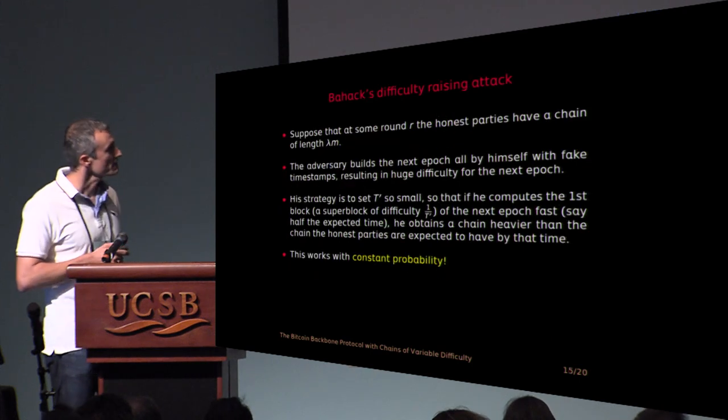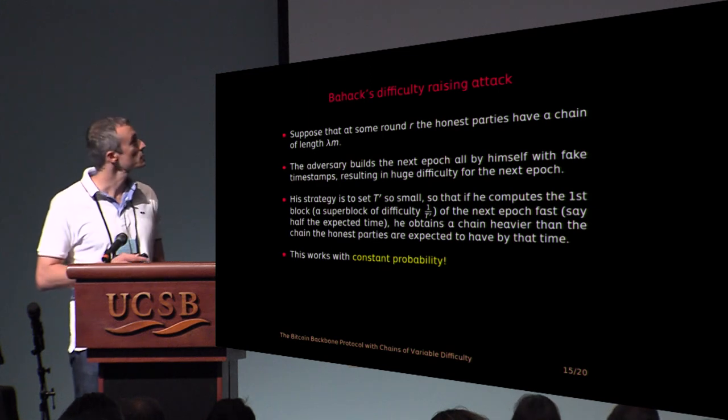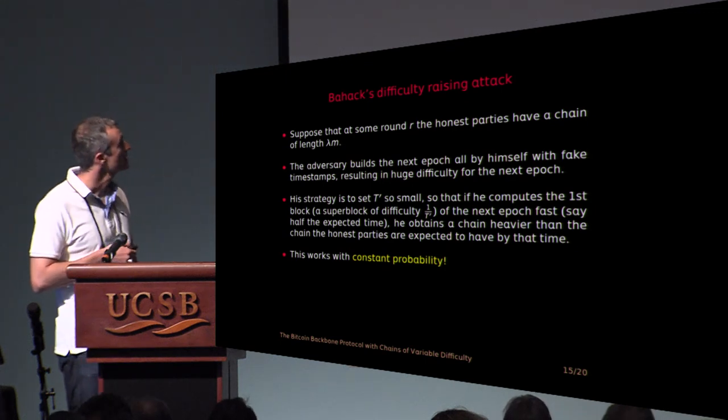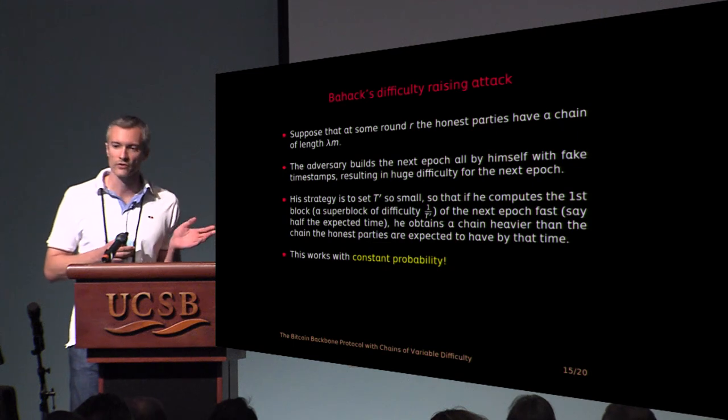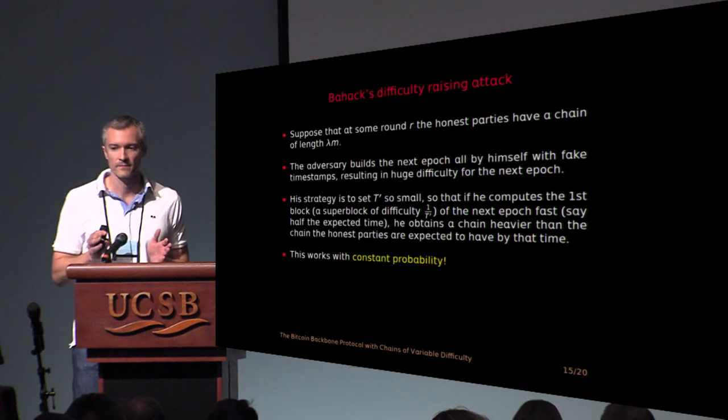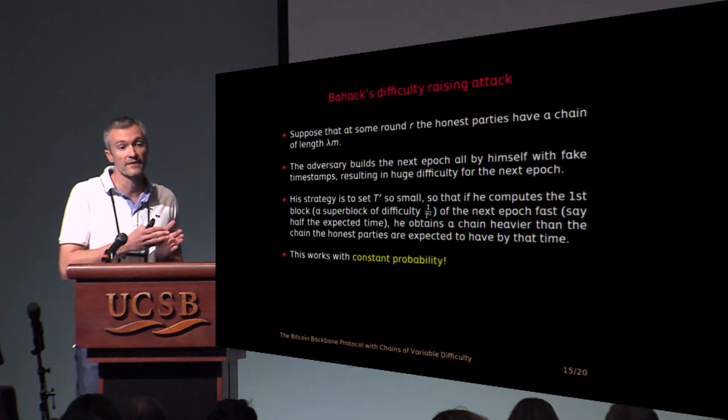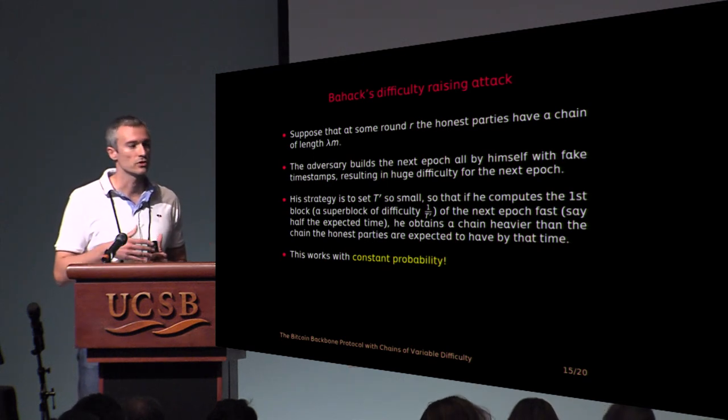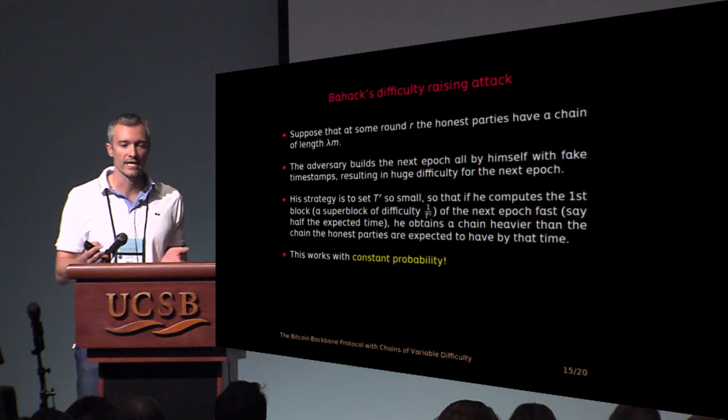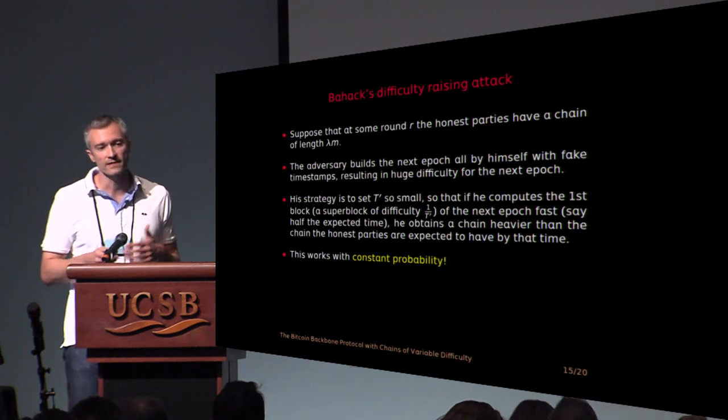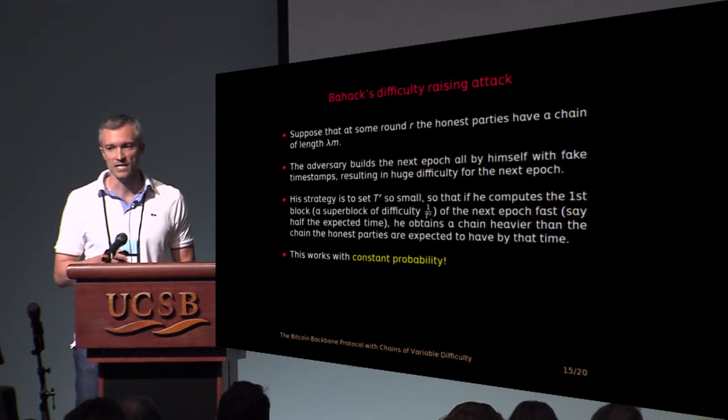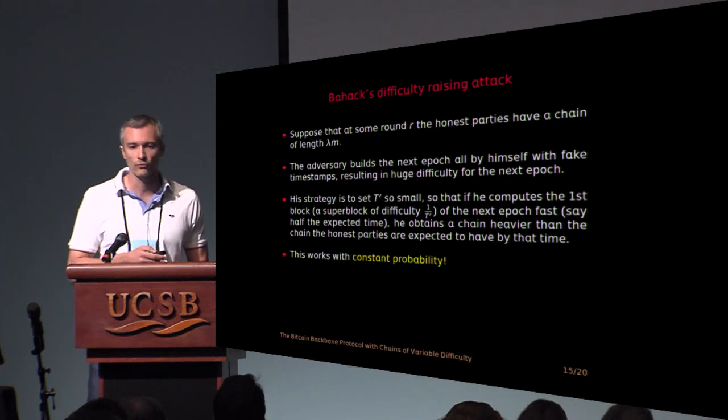Now, interestingly, if this is just what you do, there is an attack. Bahack, I think in 2013, posted a paper on Eprint with an attack in this case, in which basically the adversary ignores what the honest guys do. And he just finishes an epoch by himself with fake timestamps. So the timestamps show that it's like the epoch has finished very quickly, which would mean that the next target should be really small, so the next proof of work should be really difficult with a very high difficulty. And then if the adversary is very lucky and he succeeds in computing a single block very quickly, he can create a very large fork. So if you do some calculations, this can be shown to work with constant probability.